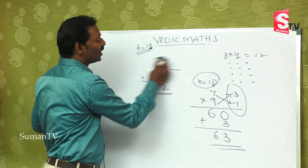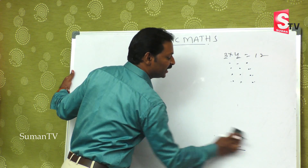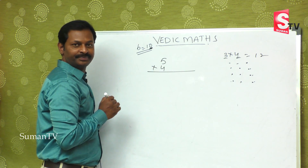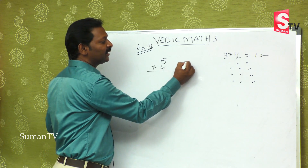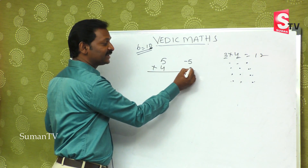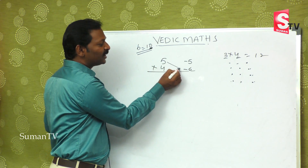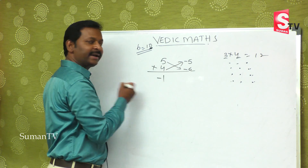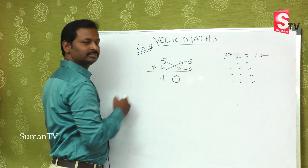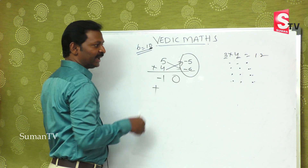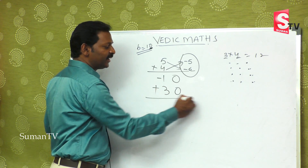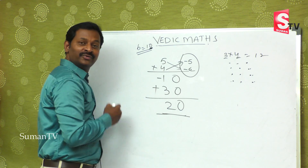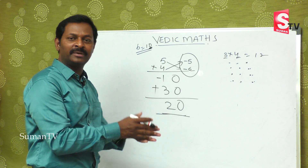Suppose you say this — nine is close to ten, so there is a small number. Suppose 5 is multiplied by 4. We will take the base as ten. Five is close to ten, so minus five we put. Four and minus six we put. Is it possible? No, not possible. So five is close to ten — that's minus five. Four is minus six, so minus into minus is plus. Six fives are thirty. Thirty and ten makes it twenty. This is the method.